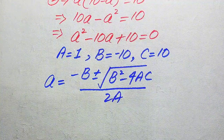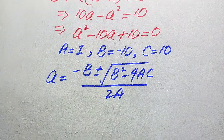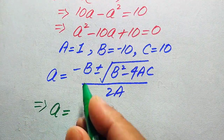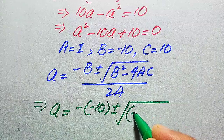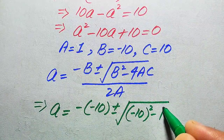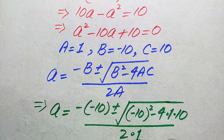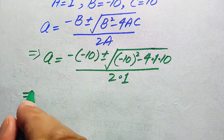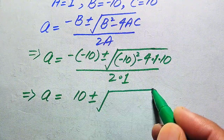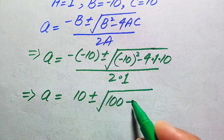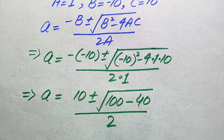We substitute the values of A, B, and C. The coefficients are: capital A equals 1, capital B equals minus 10, and capital C equals 10. Substituting: a equals negative of (minus 10) plus or minus square root of (minus 10) squared minus 4 times 1 times 10, divided by 2 times 1. Negative times negative becomes plus 10, and (minus 10) squared becomes 100.